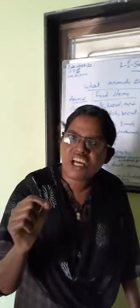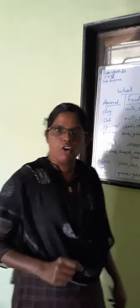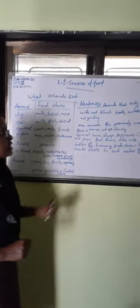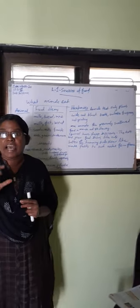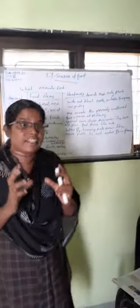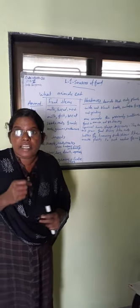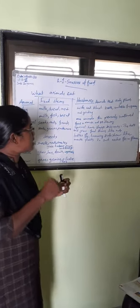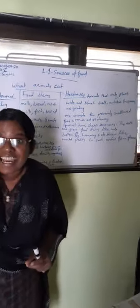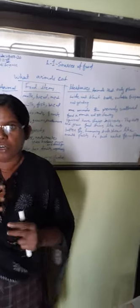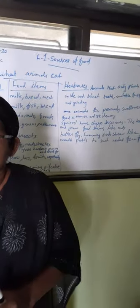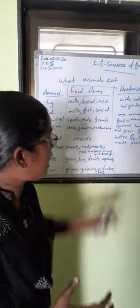What is the special characteristic of herbivorous? Herbivorous animals have wide and blunt teeth. Blunt teeth are suitable for grazing and grinding. That is, grazing and grinding also. Grazing and grinding.